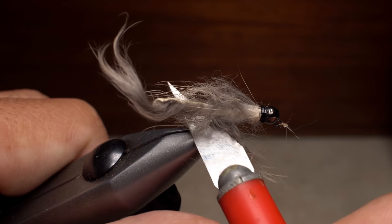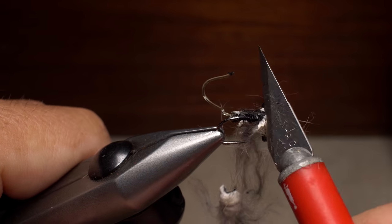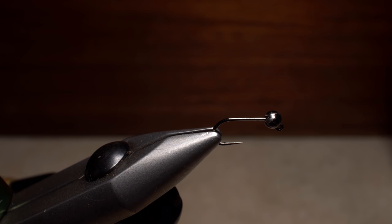For me, the primary use for these somewhat dull blades is stripping off materials from older beat up flies to recover valuable components such as articulations, dumbbell eyes, jig hooks, and tungsten beads.